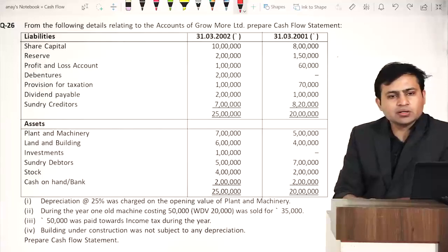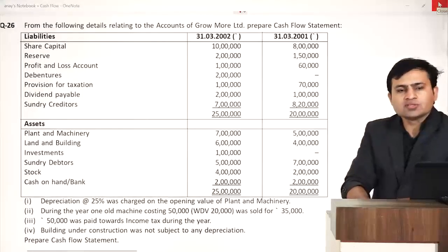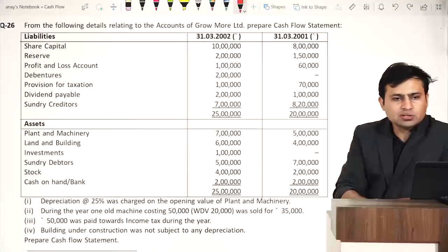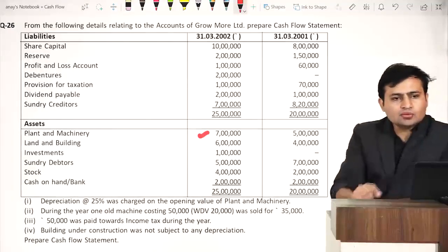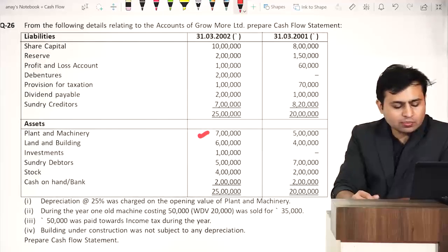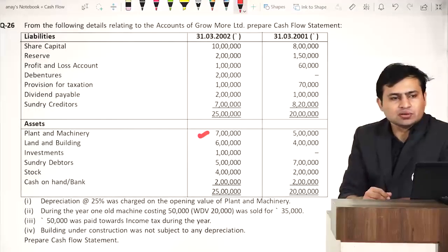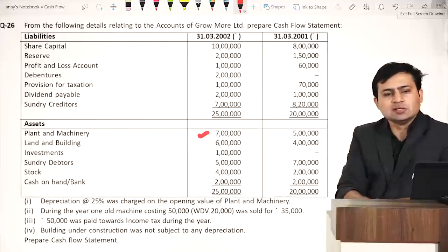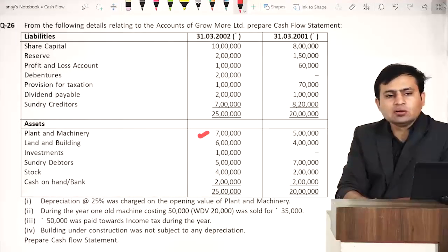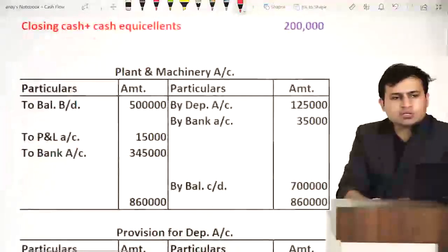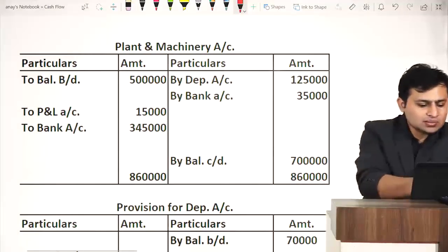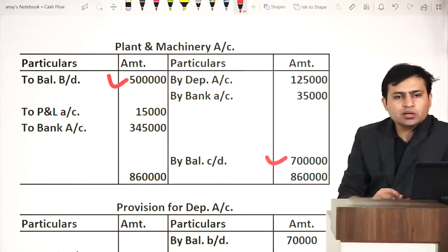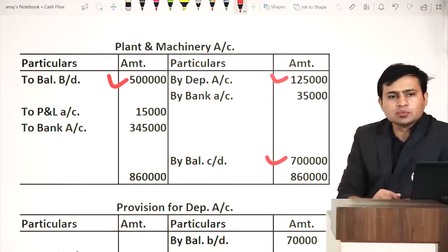Adjustments are: depreciation 25% charged on opening value of plant and machinery; one old machine costing 50,000, book value 20,000, sold for 35,000; 50,000 paid towards income tax during the year; and building under construction is not subject to depreciation. Starting calculation with adjustments: first, depreciation 25% on opening plant and machinery of 5 lakh — that gives depreciation of 1 lakh 25,000.